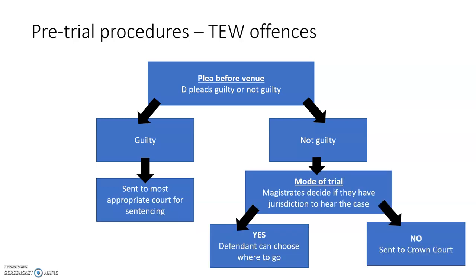For triable either way offences, it's a bit more complicated. The first stage is again plea before venue at the Magistrates' Court, where the defendant pleads guilty or not guilty. If the defendant pleads guilty, they'll be sent to the most appropriate court for sentencing. If they plead not guilty, it has to be decided which court they will be tried in — this is called mode of trial. At this stage, the magistrates decide if they have the jurisdiction to hear the case. If they think the case is too serious, they'll send it to the Crown Court for trial. If they think they do have the power to hear it, the defendant then gets a choice as to whether they have it heard in the Magistrates' Court or the Crown Court.